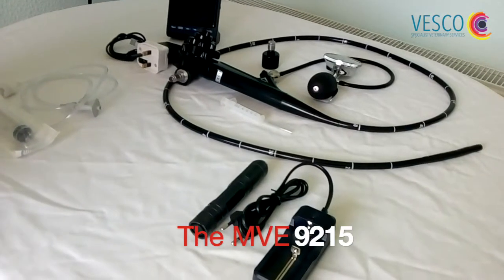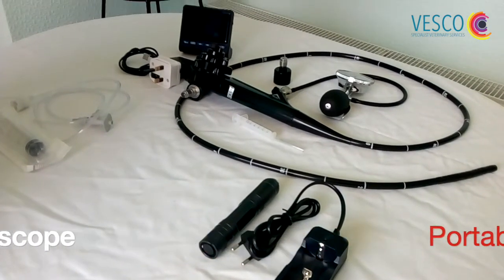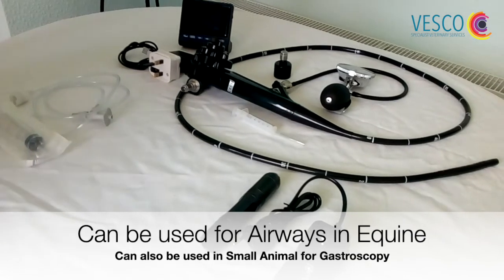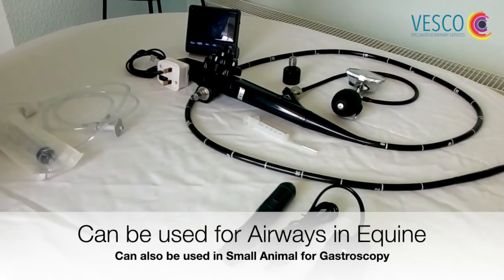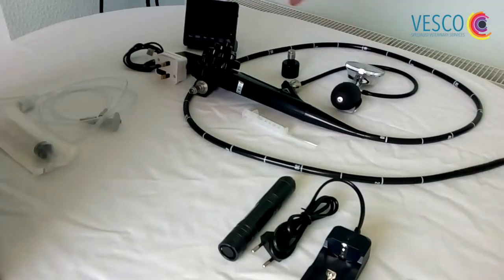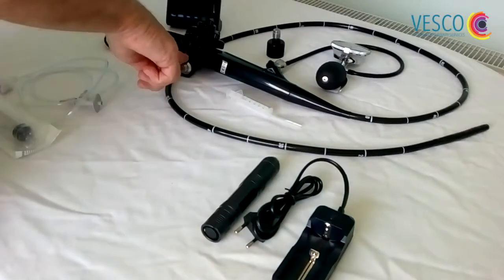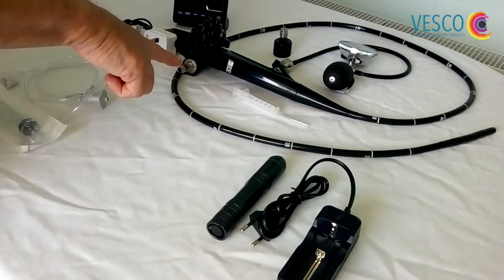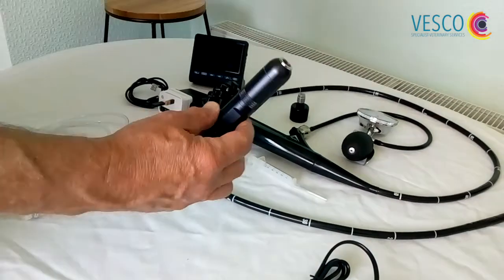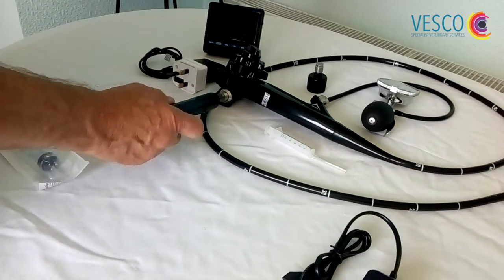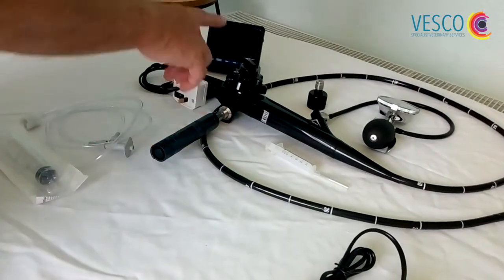We have the MVE9215, which is a portable video endoscope predominantly for use in upper respiratory work in equine. There are several subtle differences between this and your normal video scope or standard fiber scope. Here's the main scope itself with the control body and patient tube. Crucially, it doesn't have the big heavy umbilical cord which needs to be connected to the light source. This is actually a 10 watt LED light source which screws onto the light guide post. It's super bright and gives you really good image quality when you view it through the viewing screen.